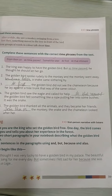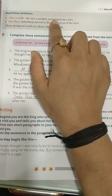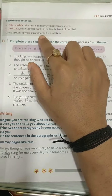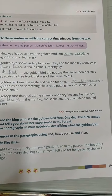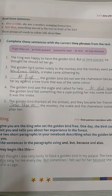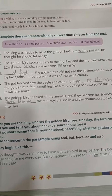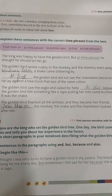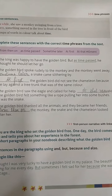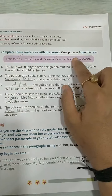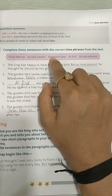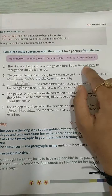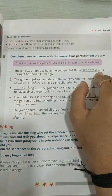Page number 39. After a while, she saw a monkey swinging from a tree. Just then something moved in the tree in front. These groups of words in color talk about time — we use them to denote time. For a while, few minutes later, just then, at that moment — these words are used to describe time. Complete these sentences with the correct time phrases from the text: from then on, as time passed, sometimes later, at first, at that moment. The king was happy to have the golden bird, but as time passed, he thought he should let her go.